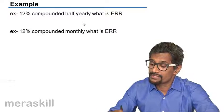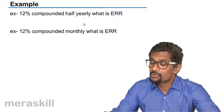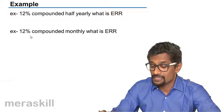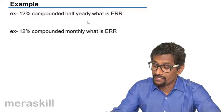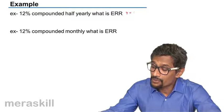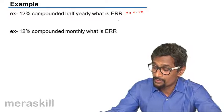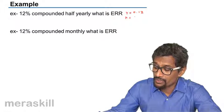Let's see how we can work on this. For example, 12% half yearly, what is ERR? Effective ERR. So R is going to be 0.12, N is going to be 2.